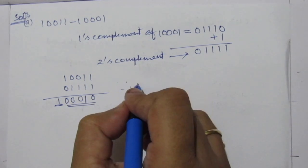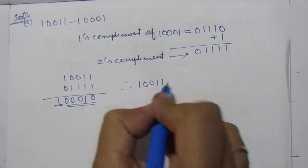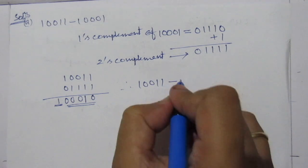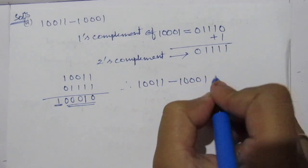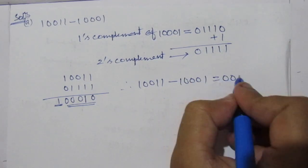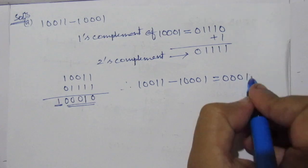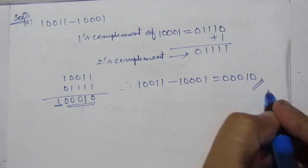Therefore, 10011 minus 10001 equals 00010. So this is the result.